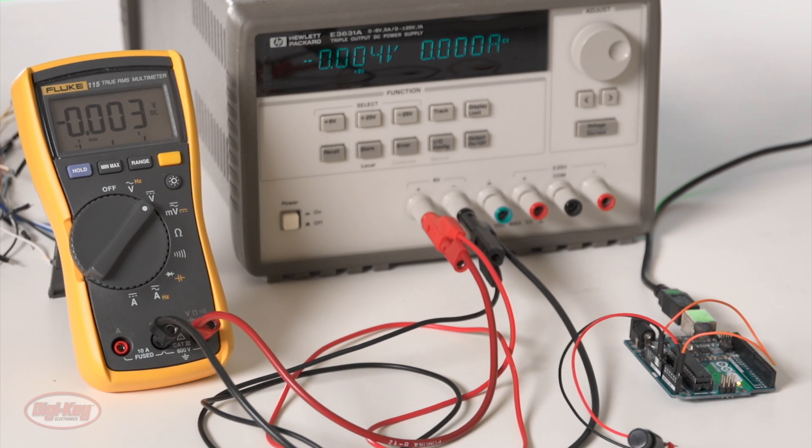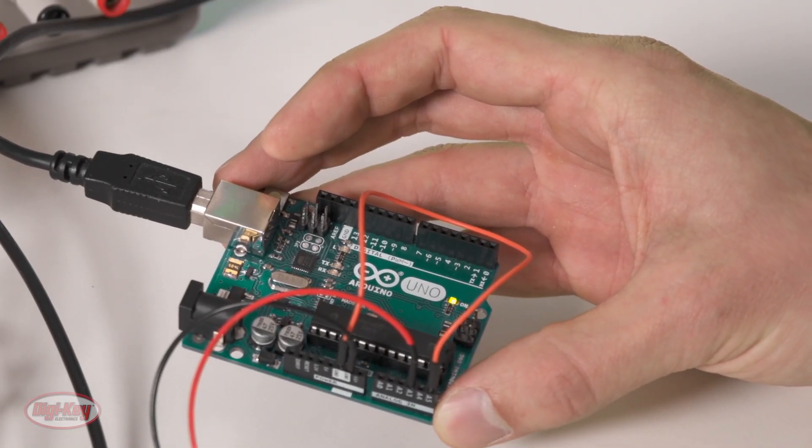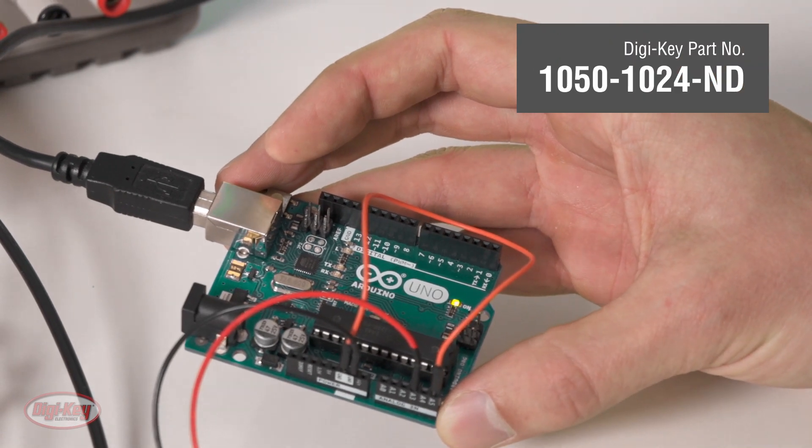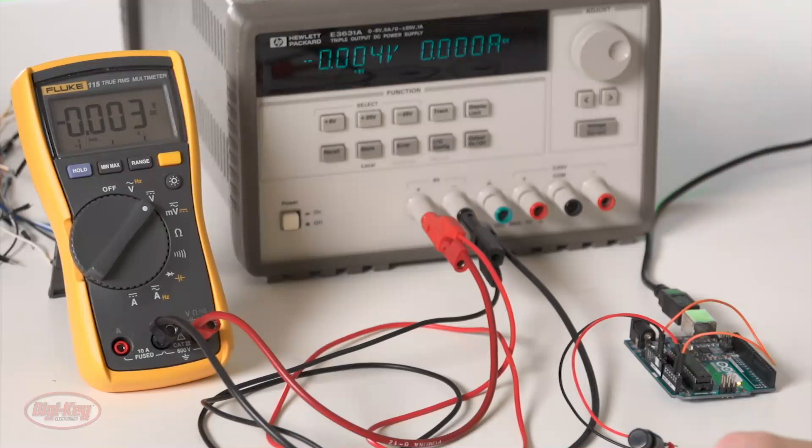Many microcontrollers have one or more integrated ADCs to make simple analog measurements. For example, the Atmega used on the Arduino Uno has a multi-channel 10-bit ADC. Let me show you what that means, and then we'll talk about using discrete ADCs for applications requiring better performance, higher resolution, or more channels than your microcontroller offers.